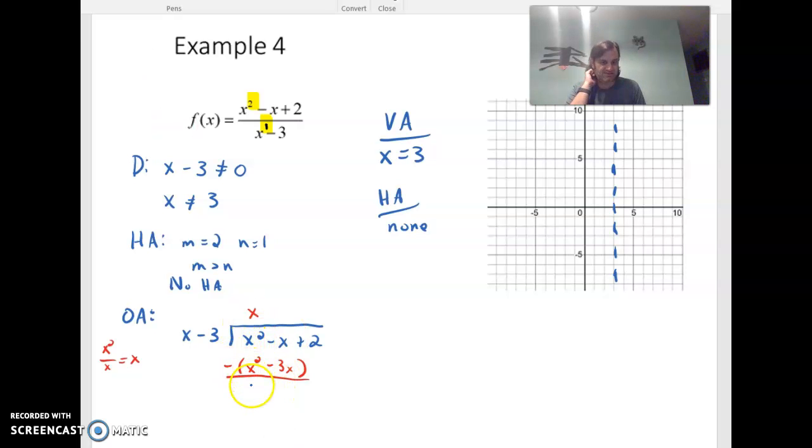So x squared minus x squared is 0. Negative x minus negative 3x, that's subtracting the negative, so that's a plus. So negative x plus 3x is 2x. Bring down the 2 from the end, so now we're dividing x into 2x.